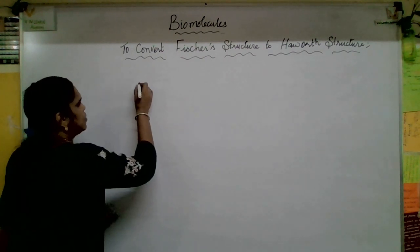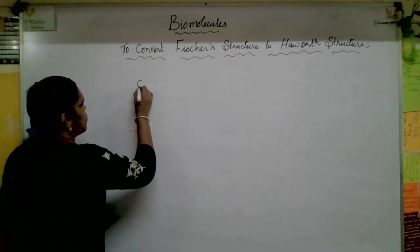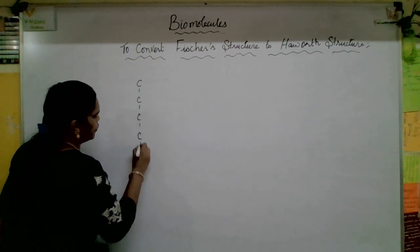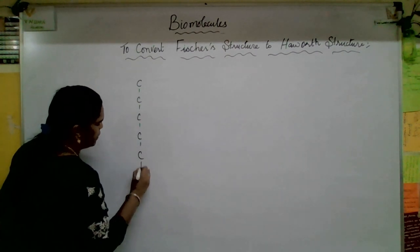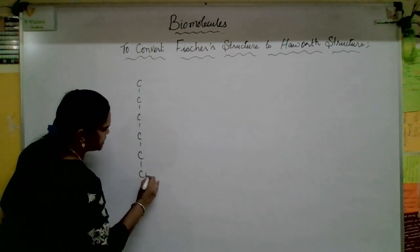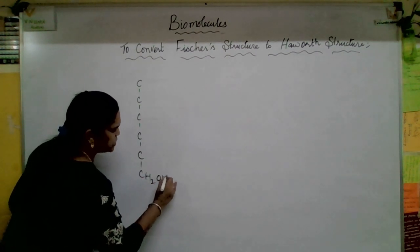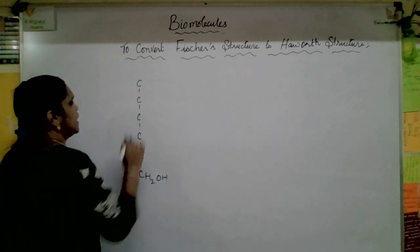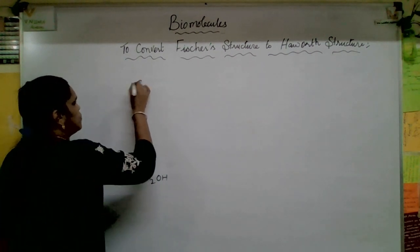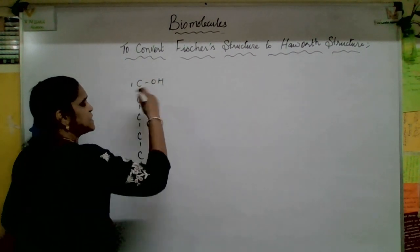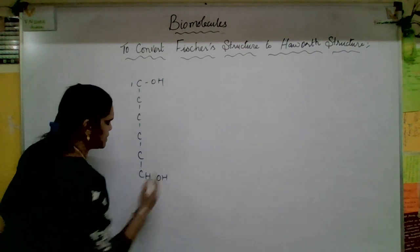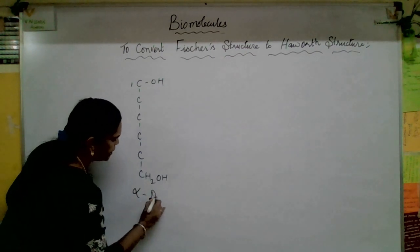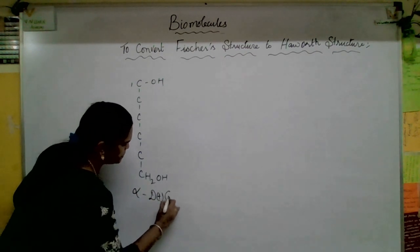Six-membered ring now. Carbon 1, 2, 3, 4, 5, and 6 carbons - it is the carbon to which OH will be attached. This is carbon 1. The OH group which is present on the right-hand side - that is alpha-D-glucose.